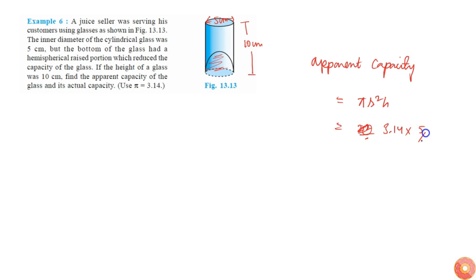Times r² is 5/2 times 5/2, times height is 10. This is 5 times 5 times 5 which is 125. So this is simply 3.14 times 125/2, which will be 1.57 times 125 centimeter cube. This is the apparent capacity.